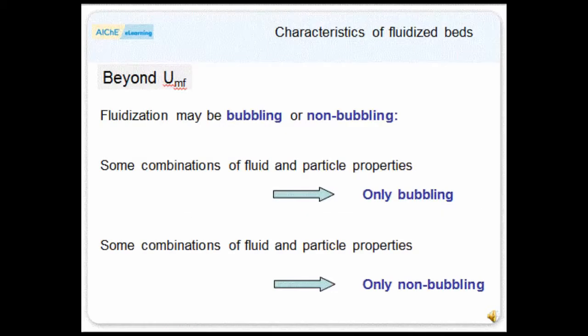Beyond minimum fluidization (UMF), fluidization may be either bubbling or non-bubbling. Some combinations of fluid and particle give only bubbling fluidization, and some give only non-bubbling fluidization. A liquid-glass bead system is an example — liquid fluidized beds rarely give anything other than non-bubbling fluidization.